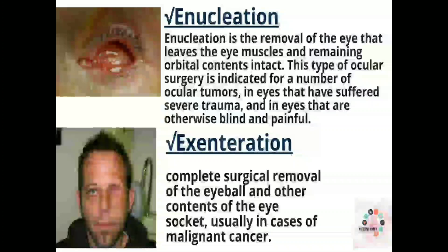Next is enucleation — removal of the eye that leaves the eye muscles and remaining orbital contents intact. This type of ocular surgery is indicated for a number of ocular tumors, in eyes that have suffered severe trauma, and in eyes that are otherwise blind and painful.